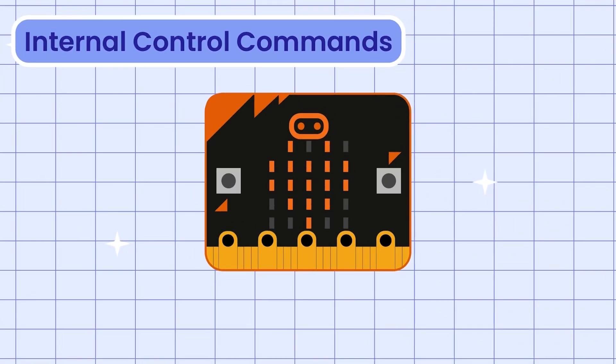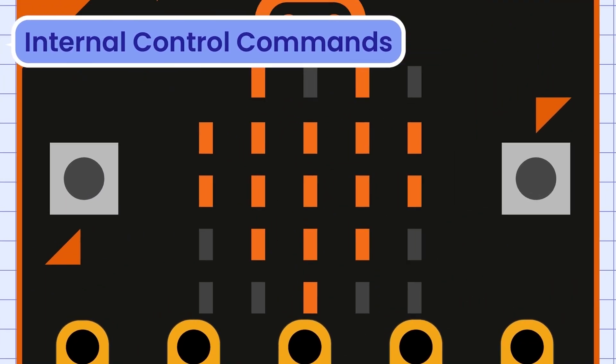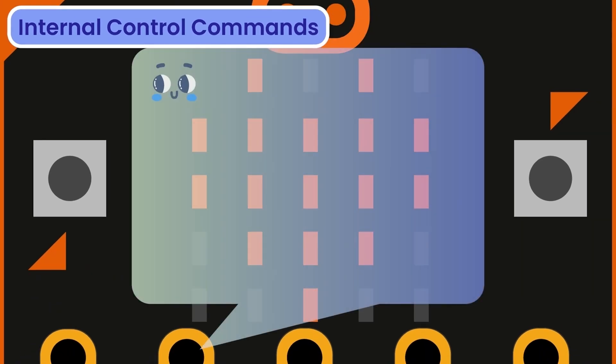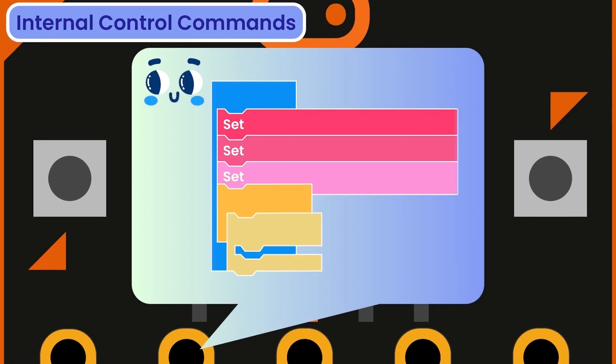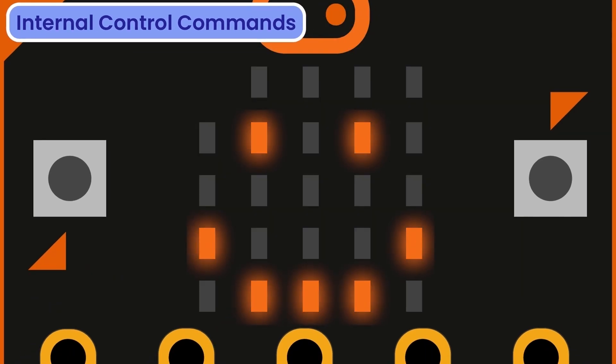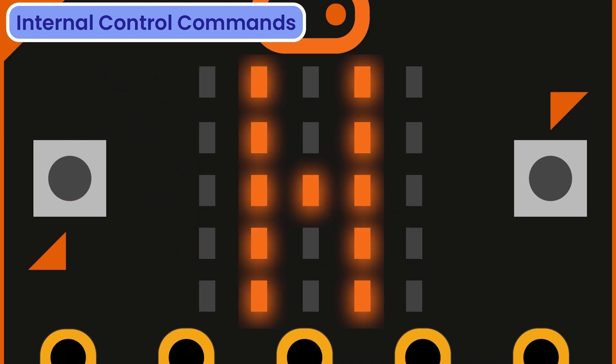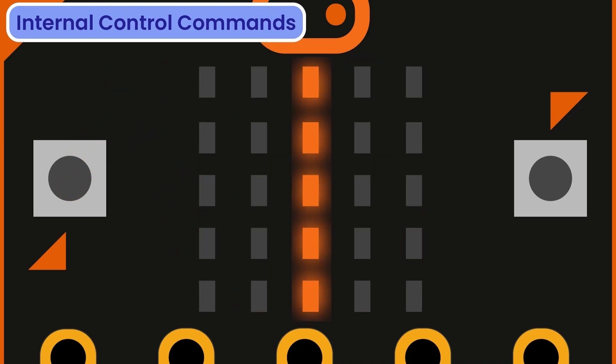Internal control commands are commands that can be used on the main microbit chip. It includes showing images, playing sounds, and displaying texts.